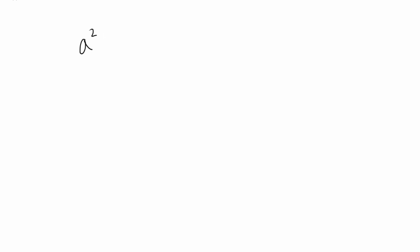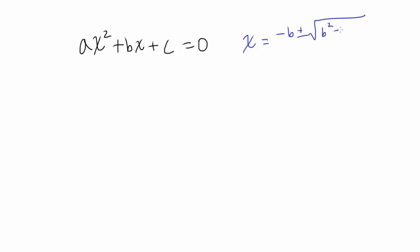In this video, we are going to attempt to prove the quadratic formula, which tells you that when you have a quadratic equation ax squared plus bx plus c is equal to 0, the solution is x equals negative b plus or minus square root of b squared minus 4ac, all divided by 2a. We are going to attempt to go from ax squared plus bx plus c equals 0 all the way to the quadratic formula.